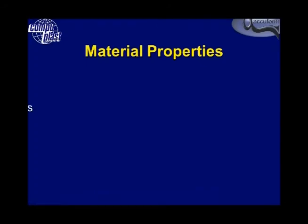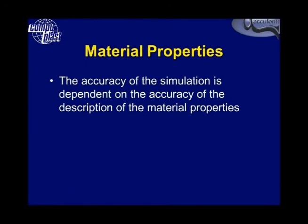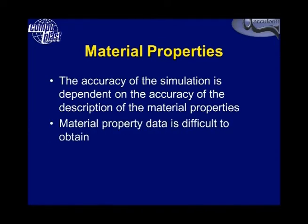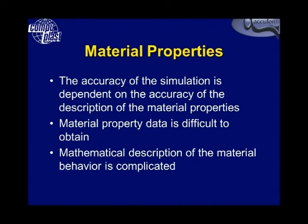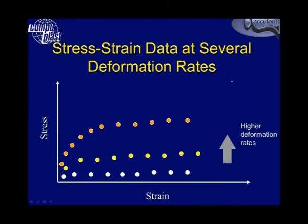Let me talk a little bit about material properties. The accuracy of the simulation is dependent on the accuracy of the description of material properties. However, material property data is difficult to obtain, and the mathematical description of the material behavior is quite complicated. That's why thermoforming simulations aren't very common. What we need to characterize the material is stress versus strain data at several deformation rates.